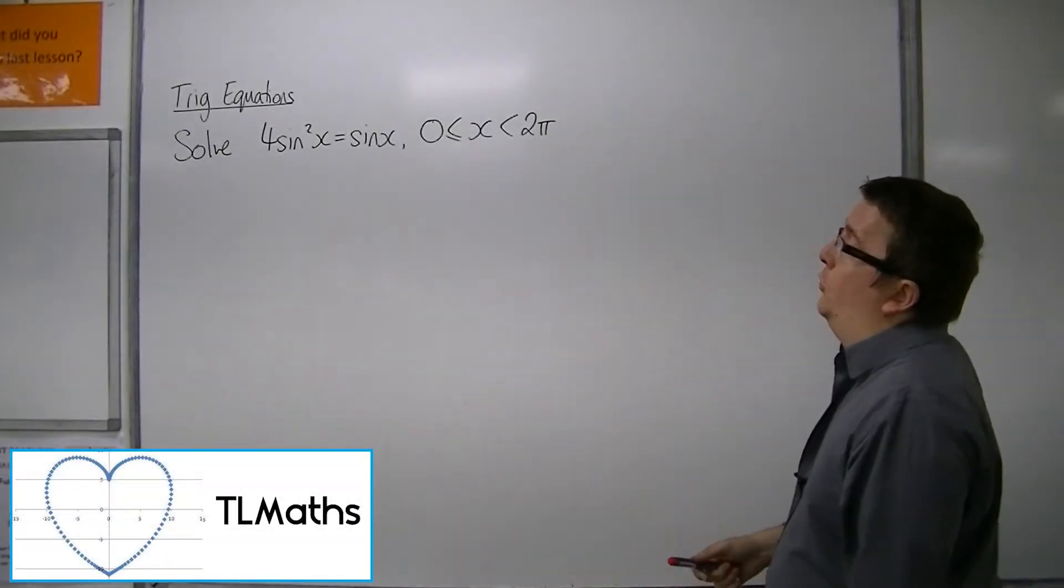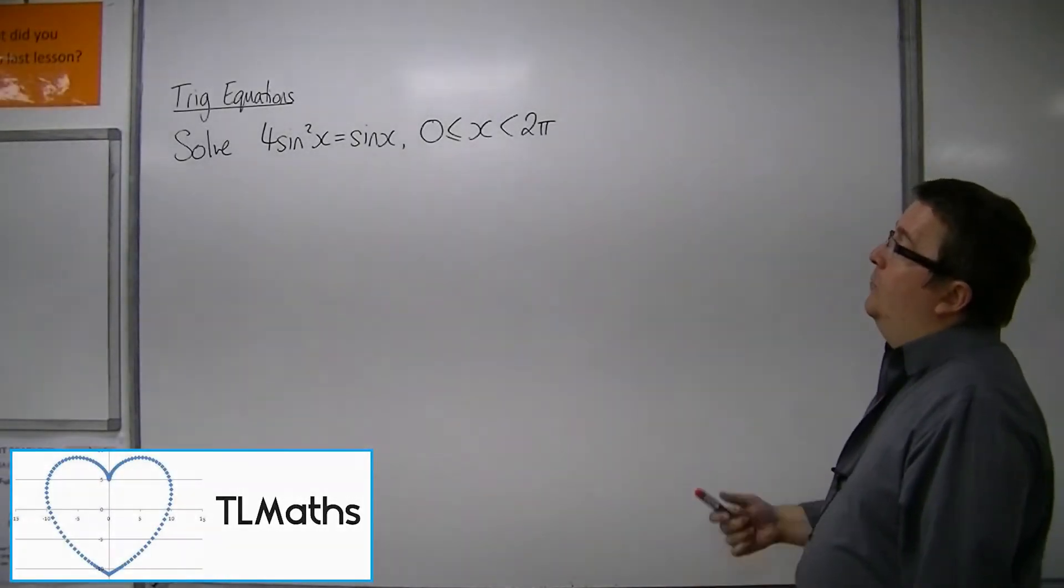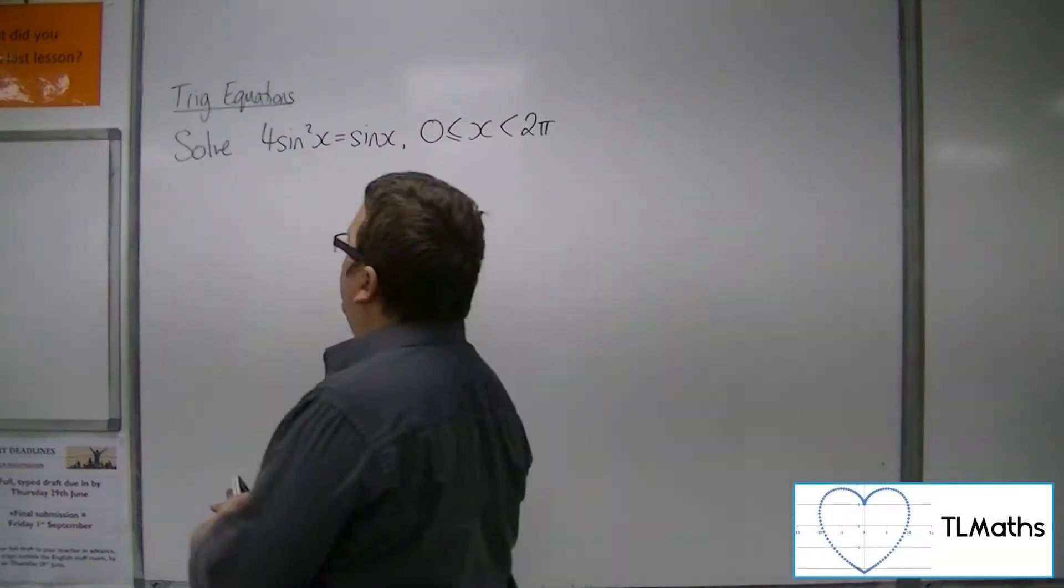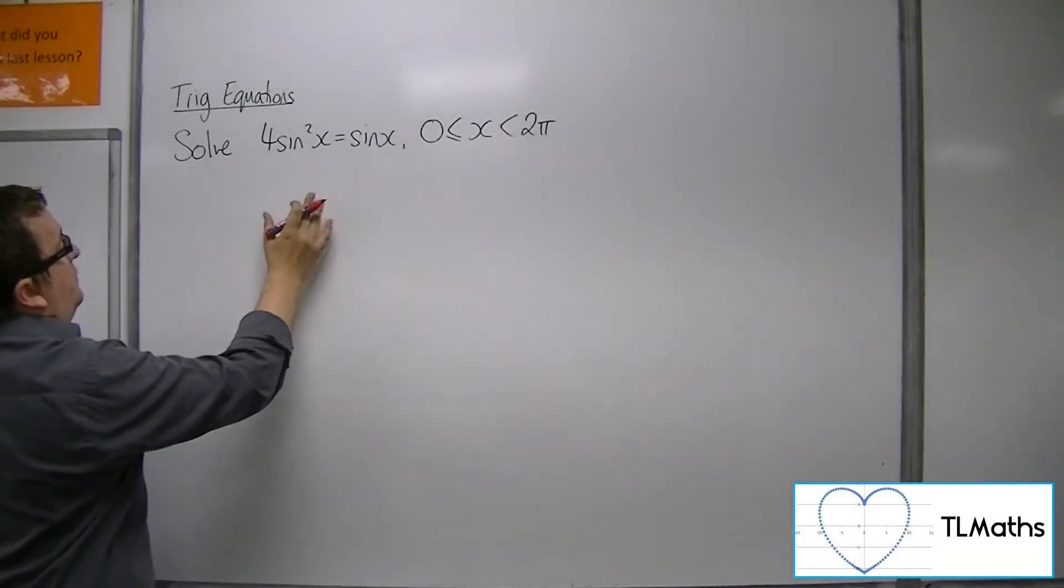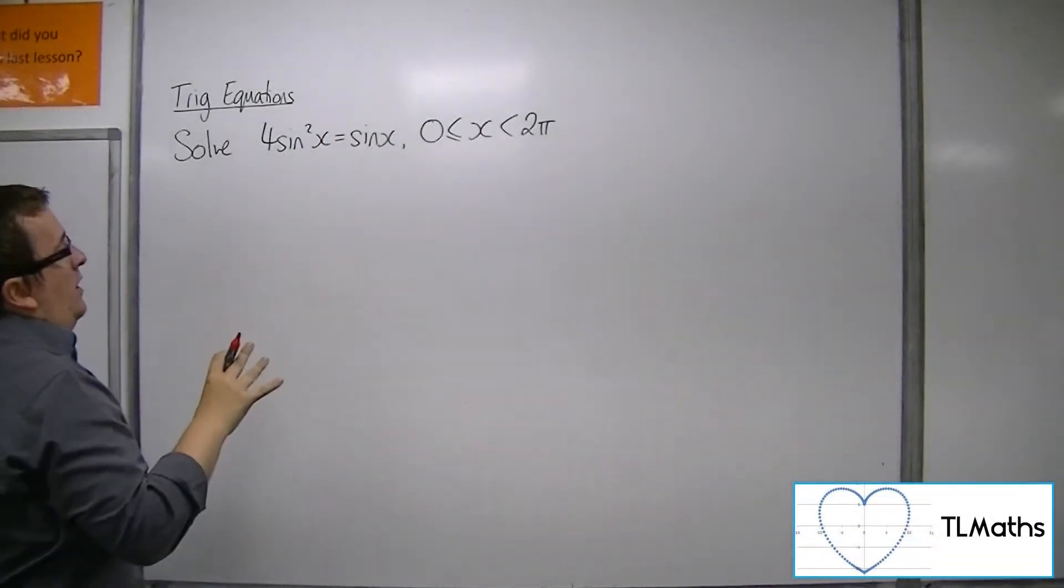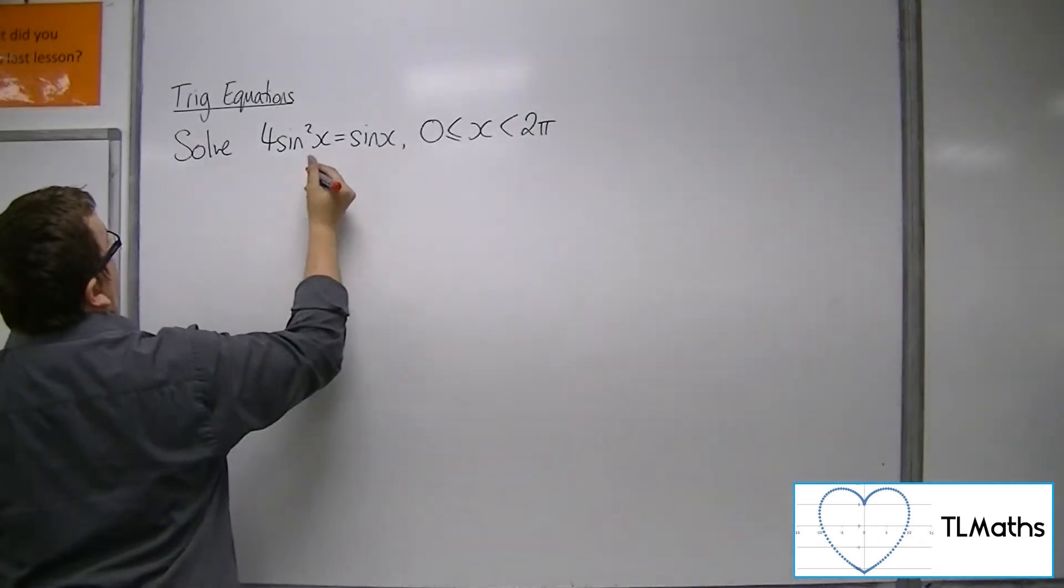OK, so here we want to solve 4 sine squared equals sine x between 0 and 2 pi. So first of all, to avoid cancelling out potential solutions, don't divide through by sine x.